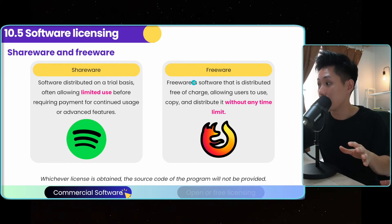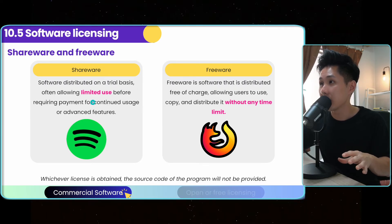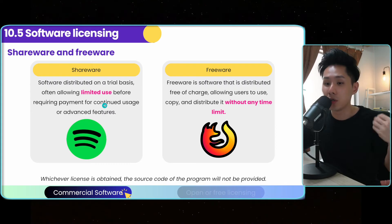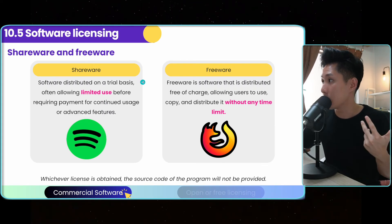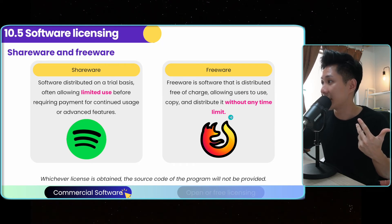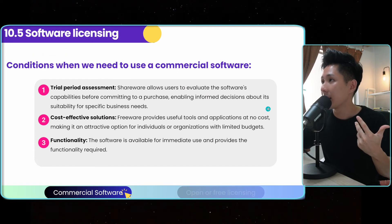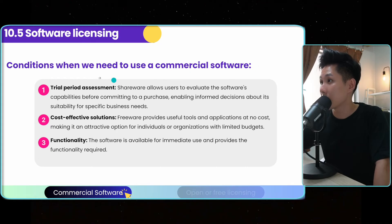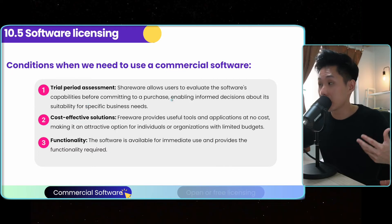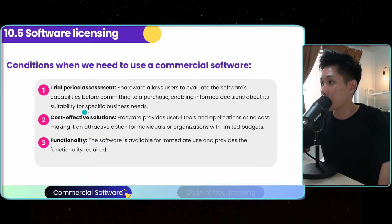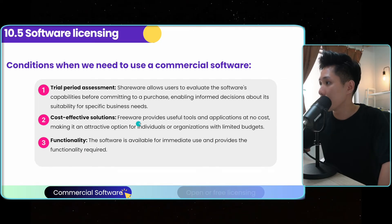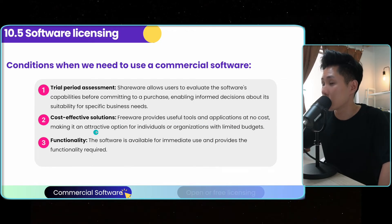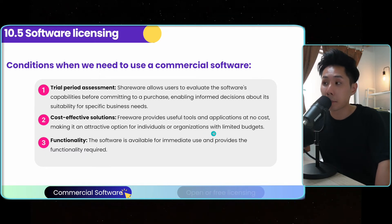Another type is shareware and freeware. Shareware is distributed on a trial basis, often allowing limited use before requiring payment — think of it like a trial program. If you like it, you pay; if not, you can't use it anymore. Freeware is distributed free of charge with no time limit. The conditions for using these: shareware allows users to evaluate the software's capability before committing to a purchase, enabling informed decisions about its suitability for specific business purposes. Freeware provides users useful tools and applications at no cost, making it attractive for individuals or organizations with limited budgets.